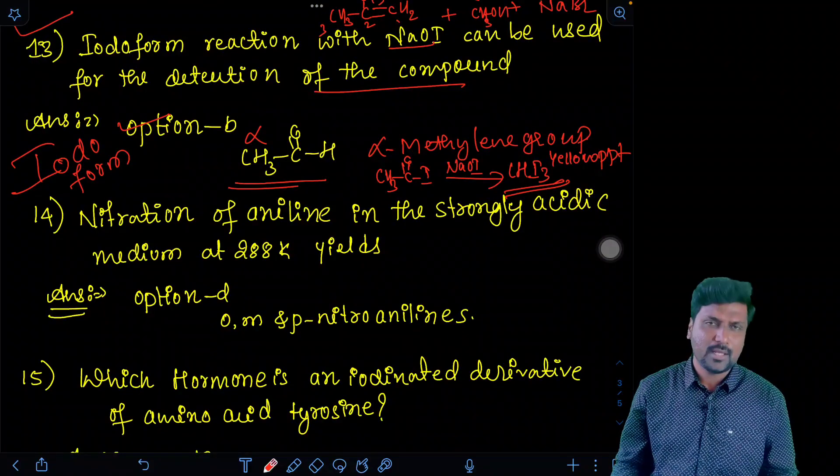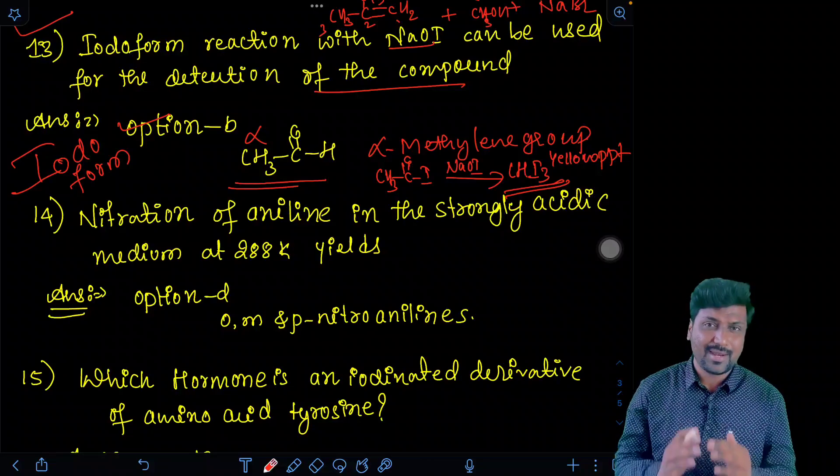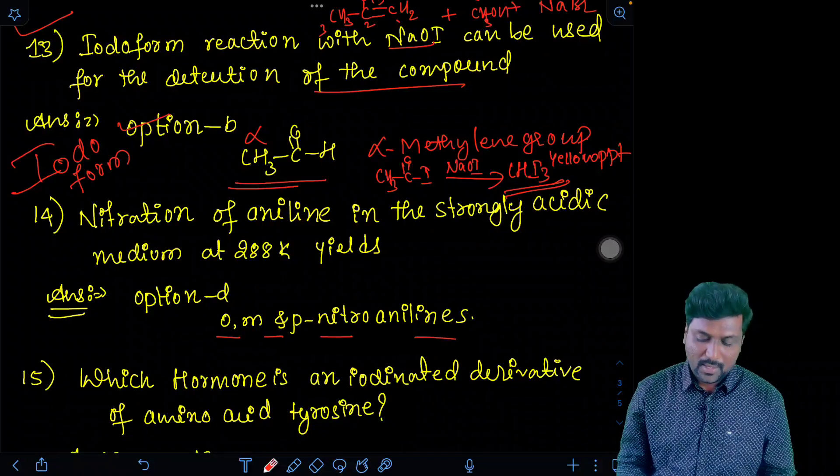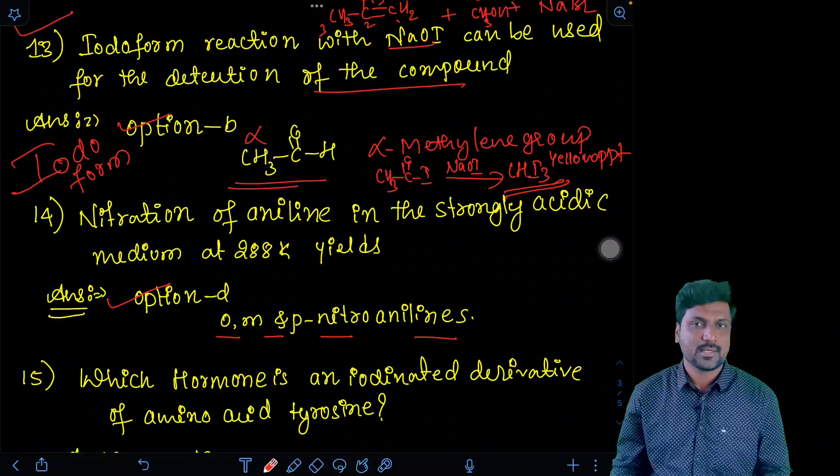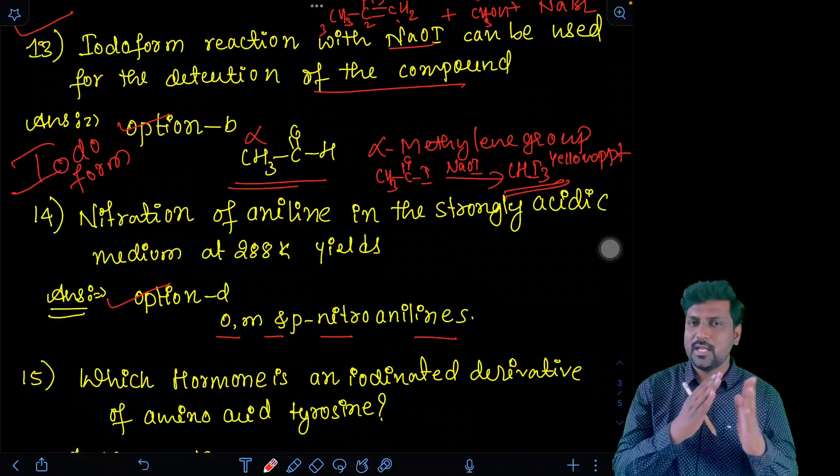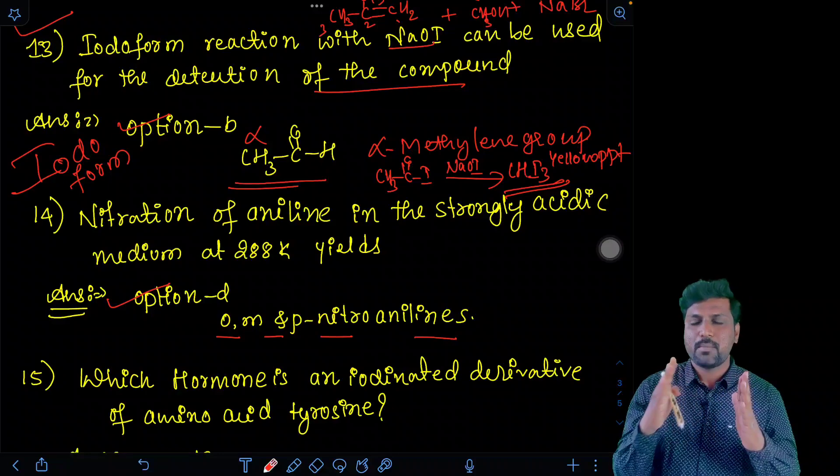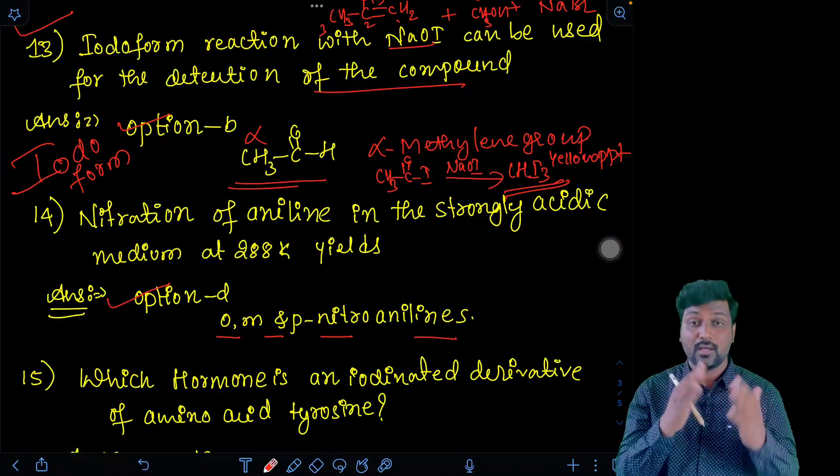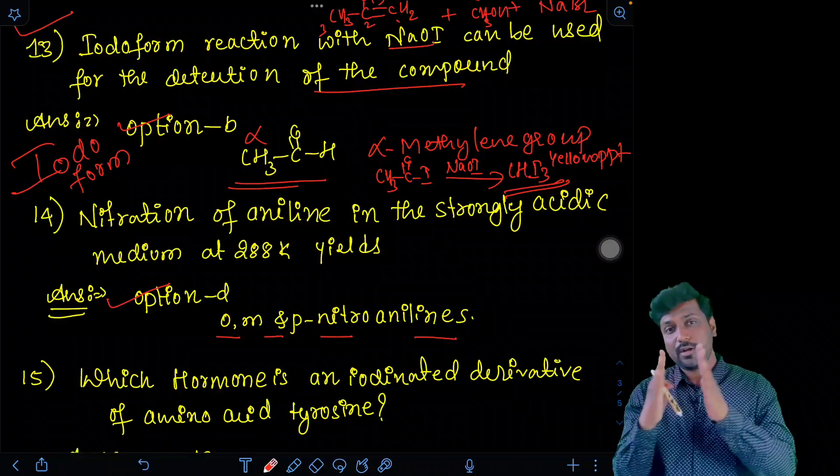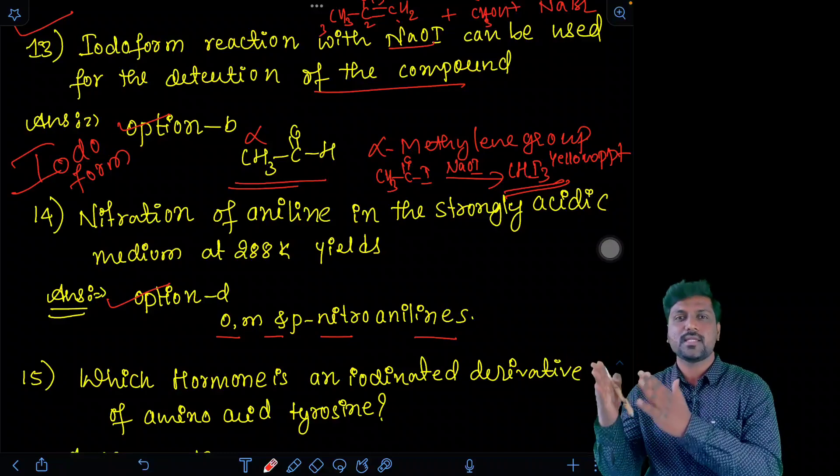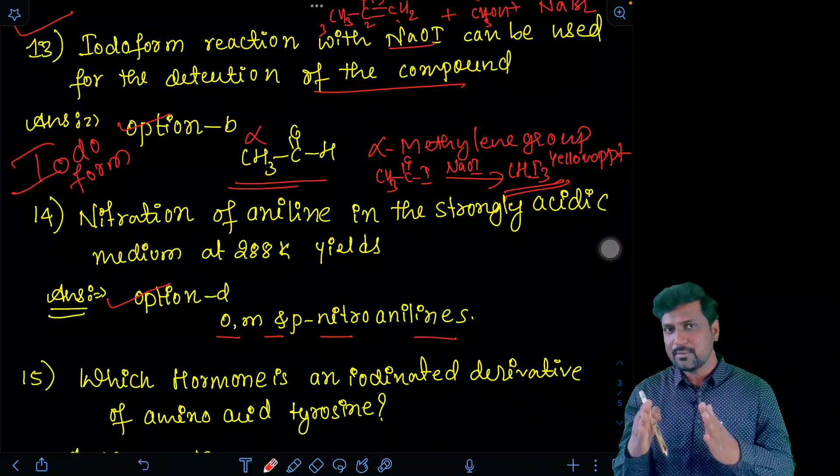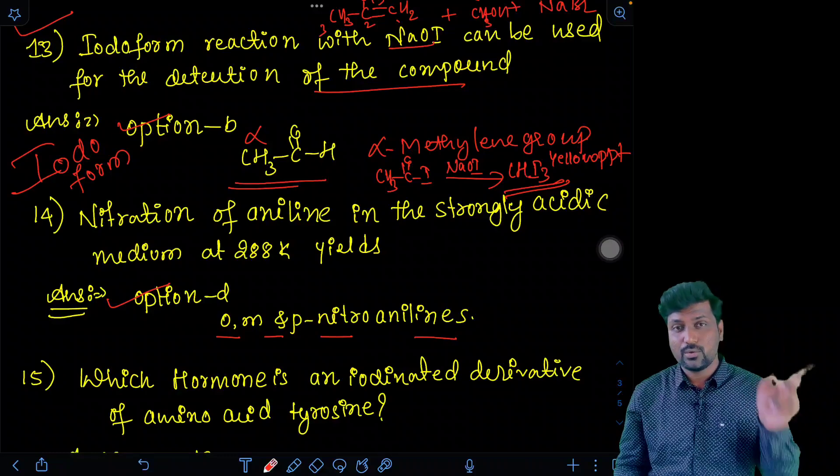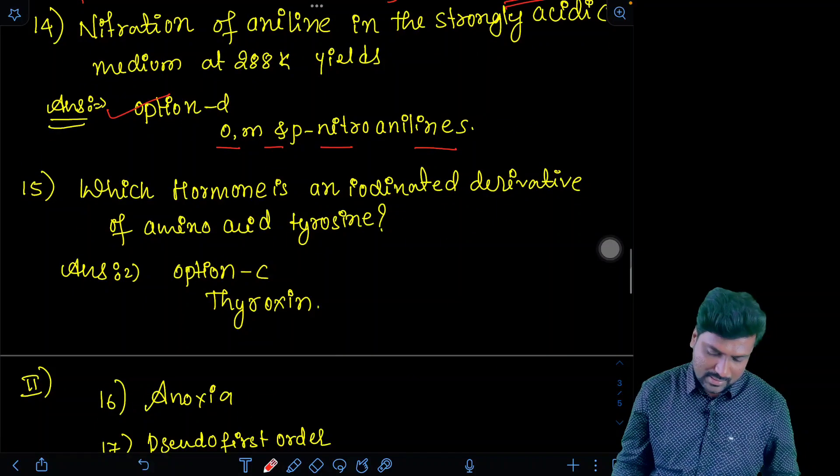Fourteenth question. Nitration of aniline in strong acidic medium at 288 Kelvin. It is a direct nitration. It will give a black color tarry mass of mixture of ortho, meta and para nitro aniline. Therefore, option D is the answer. Direct nitration - some of the aniline not only attacks to the ortho and para positions. Some of the aniline changes to anilinium ion. Try to understand. Some of the aniline on reacting with the nitric acid and sulfuric acid of nitrating mixture changes into anilinium ion. They are meta directing group. Anilinium ion is a meta directing group. So therefore, we will get ortho and para and meta nitro aniline. Answer is D.